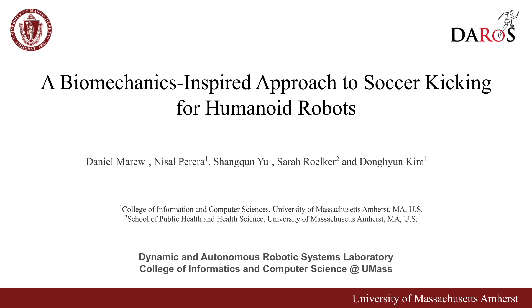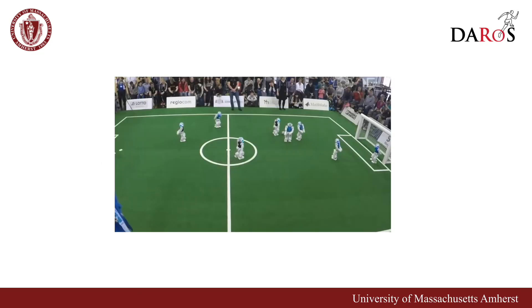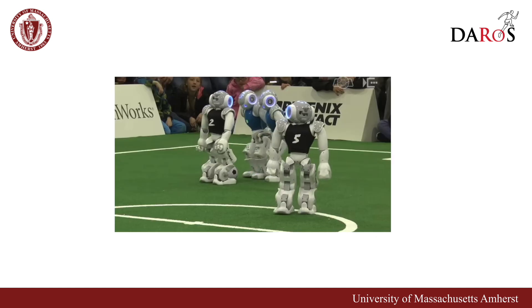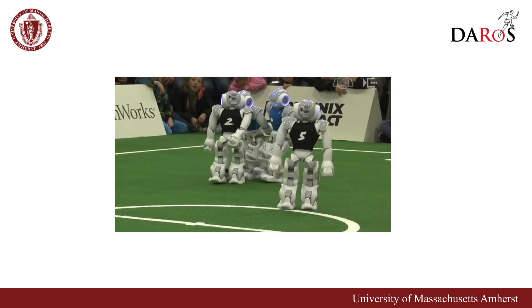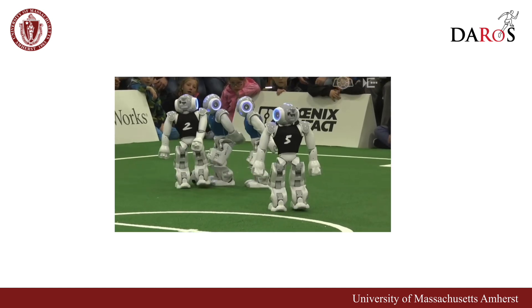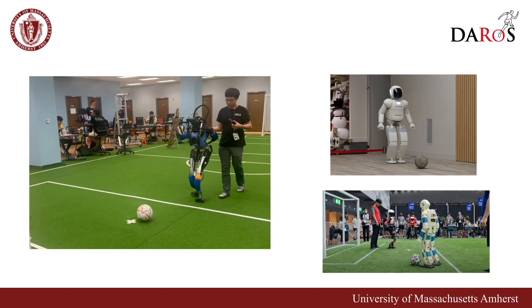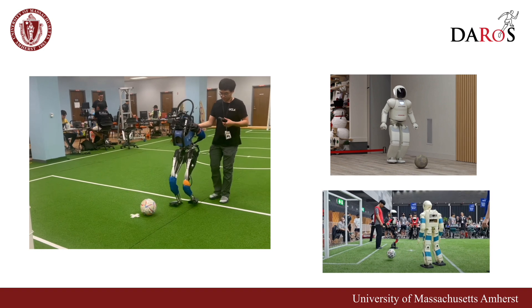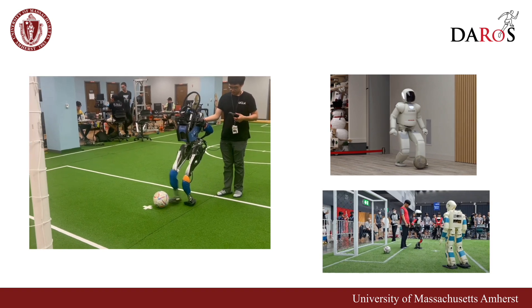The RoboCup Federation aims for humanoid robots to outperform human soccer champions by 2050. Current robotic kicks prioritize stability, resulting in conservative walk and kick motions.